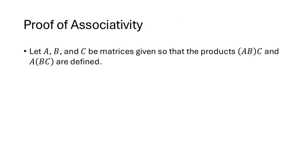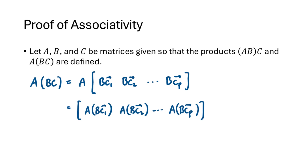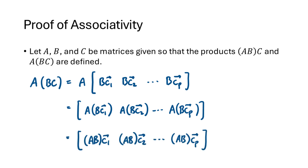If you have three matrices A, B, and C defined so that the products ABC and (AB)C are defined — meaning for each pair the number of columns of the first matrix matches the number of rows of the second — then when we multiply A times (BC), we get the matrix whose columns are A times B times each column of C. Using the algebraic property of matrix multiplication, we shift the parentheses so that A(BC₁) equals (AB)C₁, and so on. That gives us the matrix AB multiplied by each column of C, which is the definition of (AB)C. So associativity is proved.